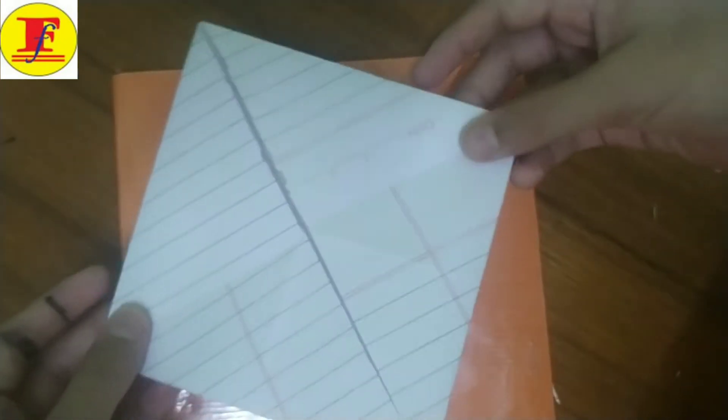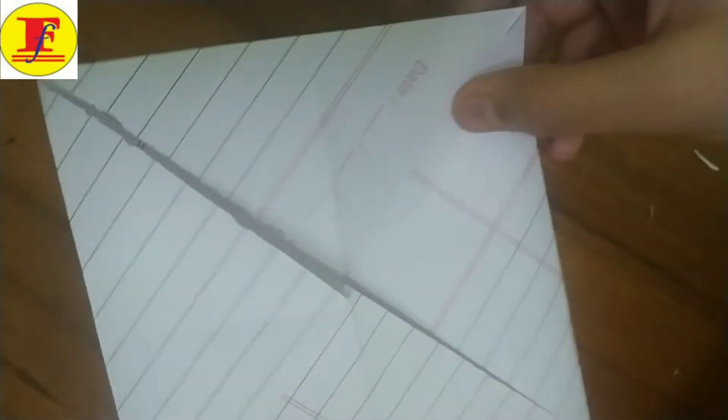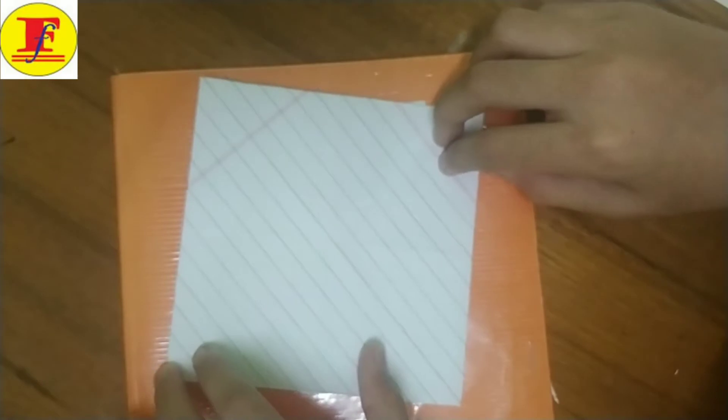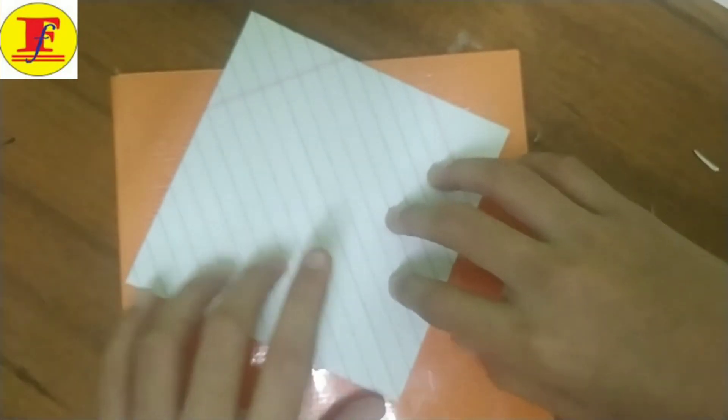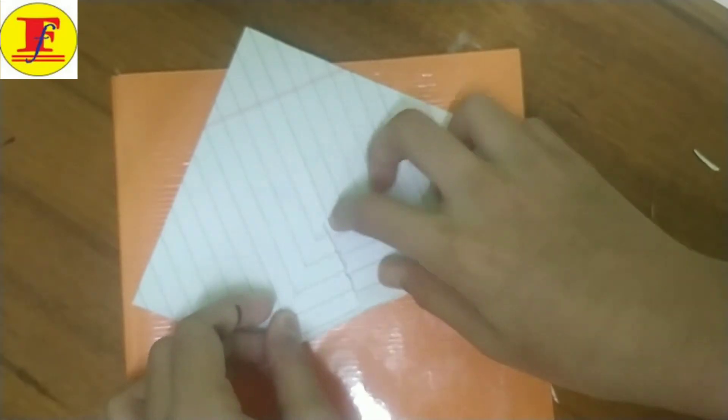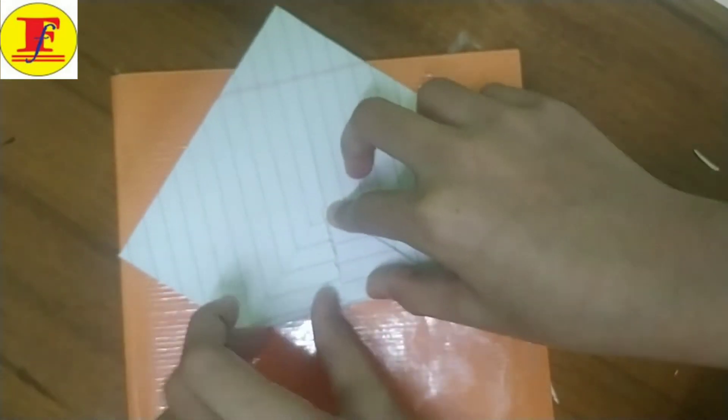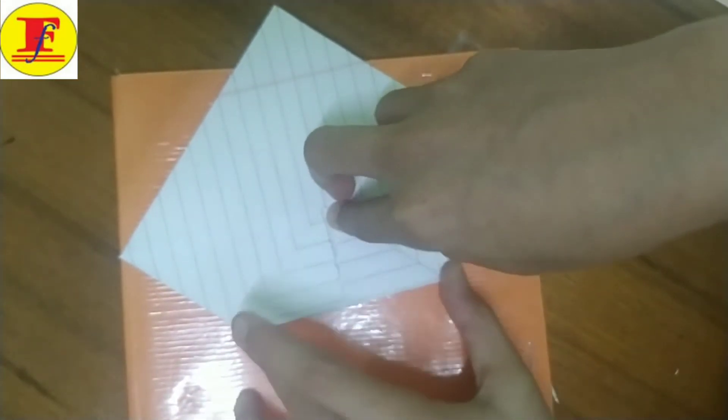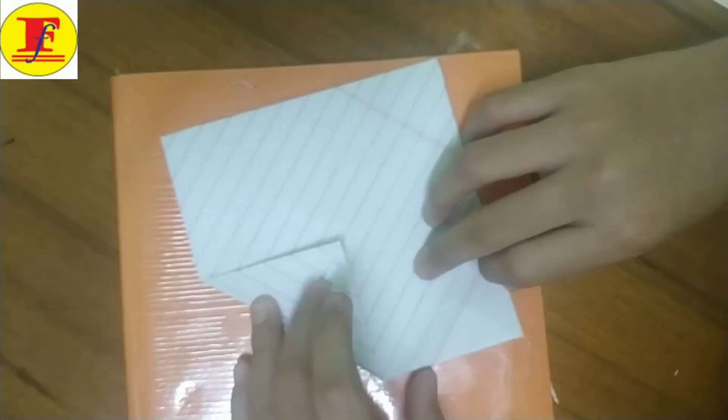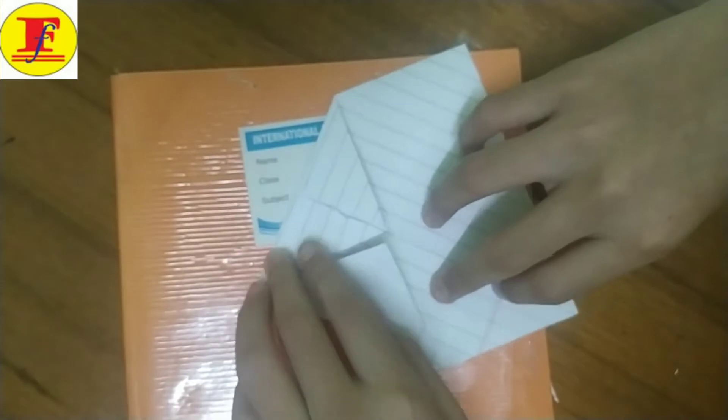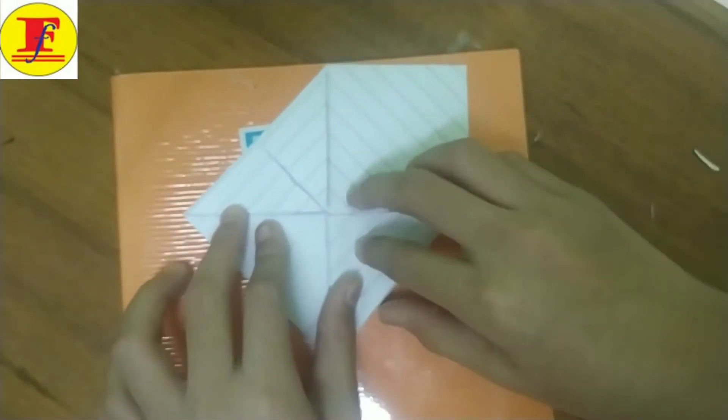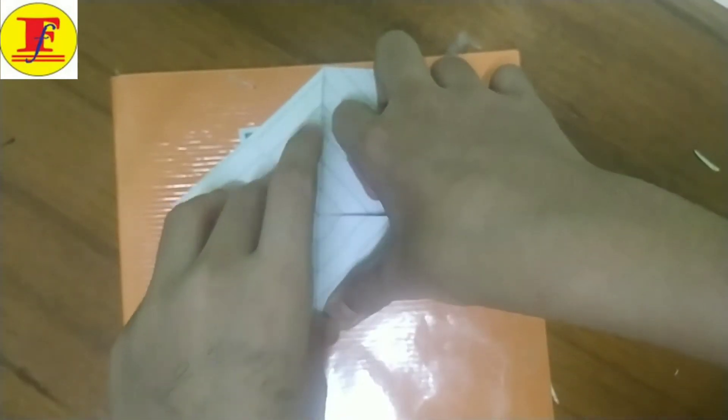Now you will get a paper of this type. Now here you have to just turn it over. Then also you will have a square only. But if you will do like this you will get a type of a diamond. Now fold the upside, like same. And now this side.